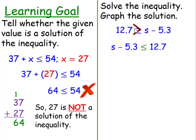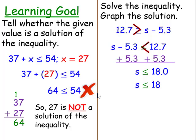Notice that the inequality symbol is pointing to the s. When I use the symmetric property, I need to make sure I reverse my inequality symbol so that it is still pointing to the s. Now, what undoes subtraction? Addition. 12.7 plus 5.3 is 18.0, which is the same thing as 18.